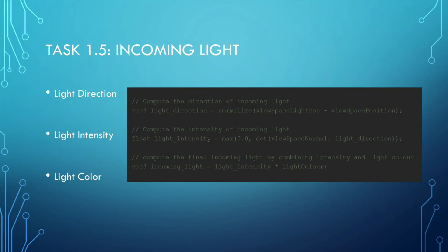Firstly, we need to compute the direction from the surface towards the sun using the point light simulation method. When we have the direction from the surface to the sun, we could generate the intensity of the incoming light from the sun to the surface, which factors in the angle between the surface normal and the direct sunlight. Also, we need to factor in the color of the sunlight to generate the final result of the incoming light. When we have the direction, intensity, and the color of the incoming light towards the surface, we could compute the outgoing light, which is light reflected by the surface.